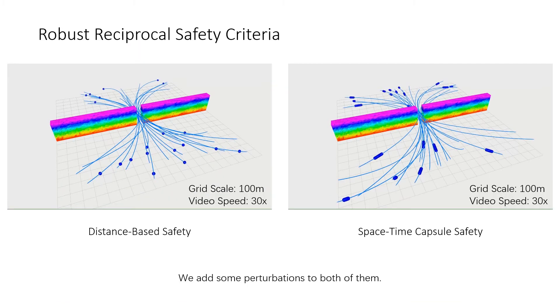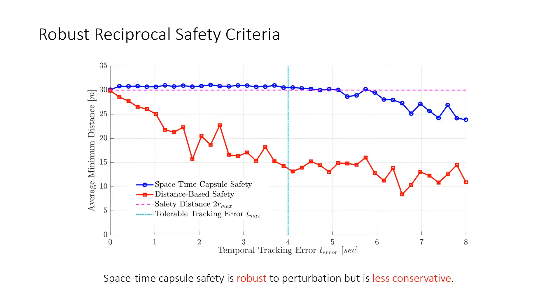Both safe distances and space-time capsules are tested in this case, where 20 drones fly through the same narrow passage. We add perturbations to them and count their distances and temporal tracking errors. As shown in the figure, our safety criterion is more robust to perturbations and the resultant tracking errors.